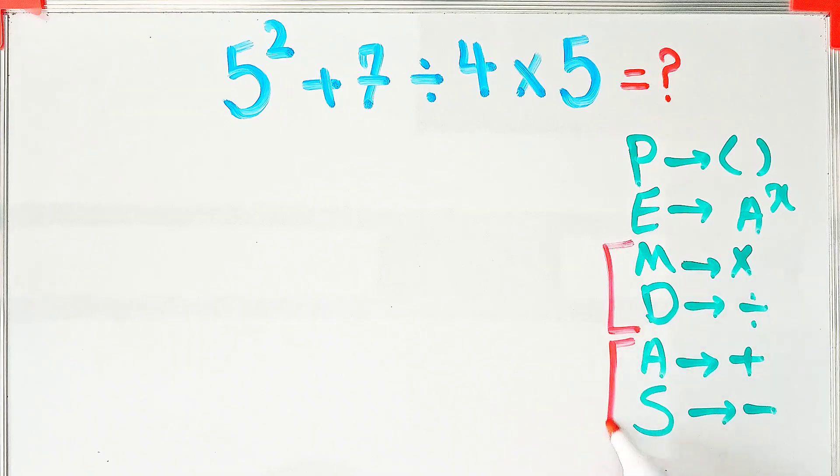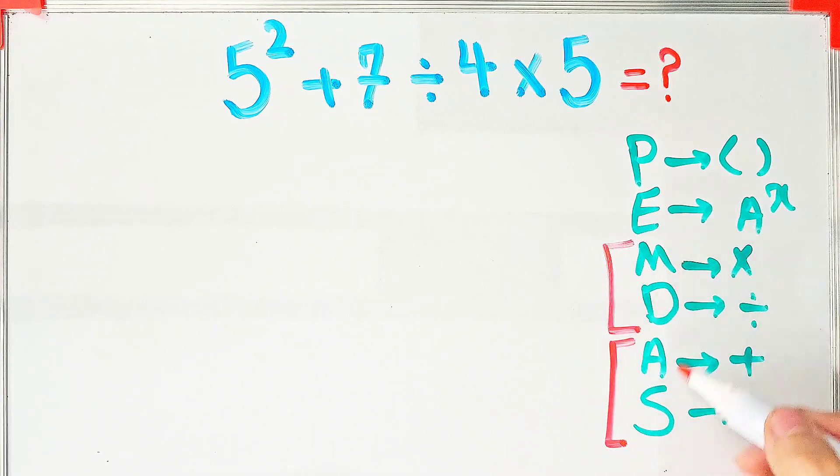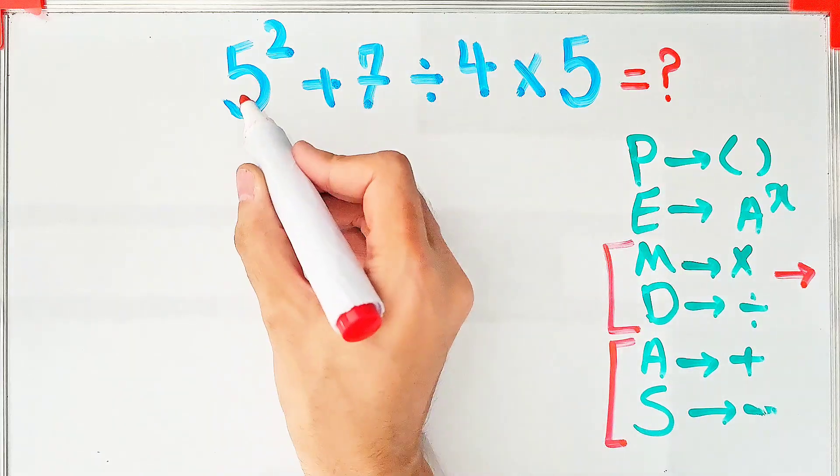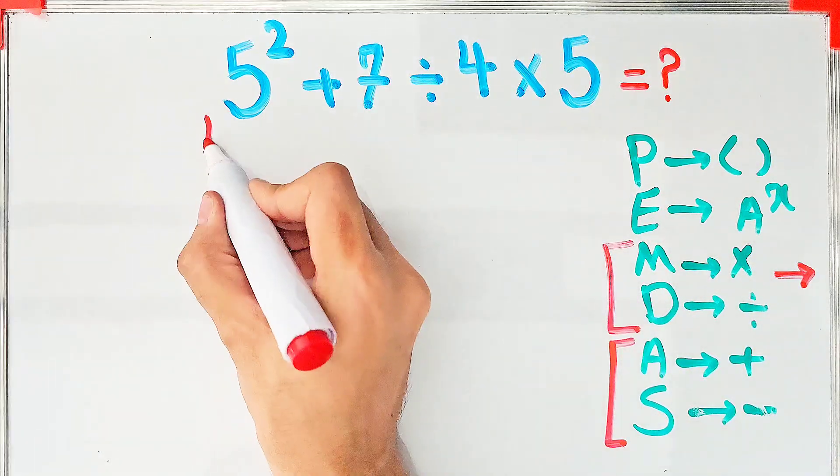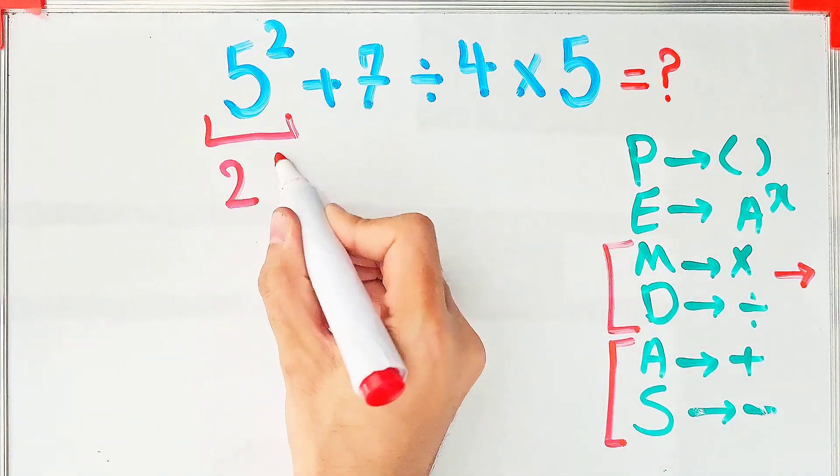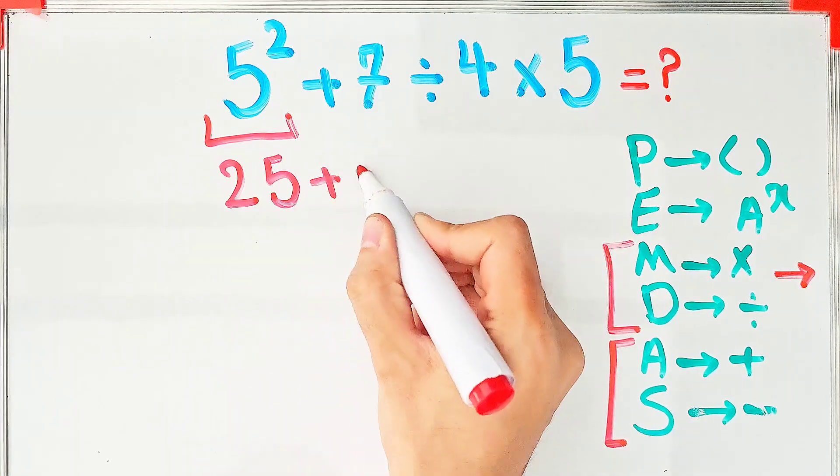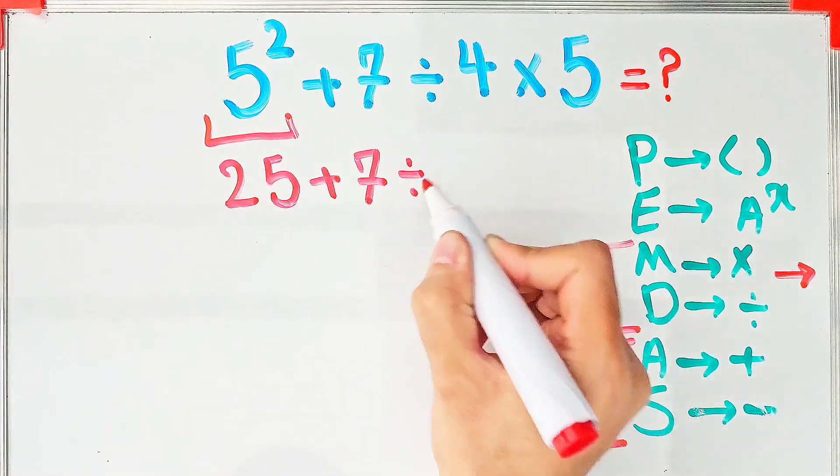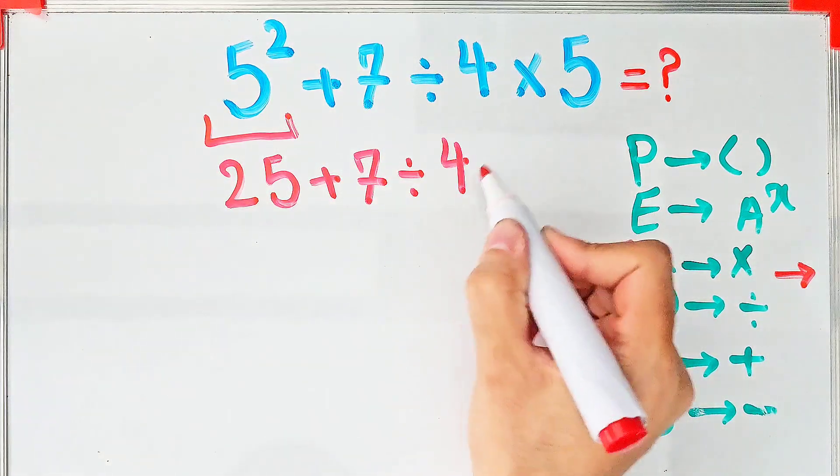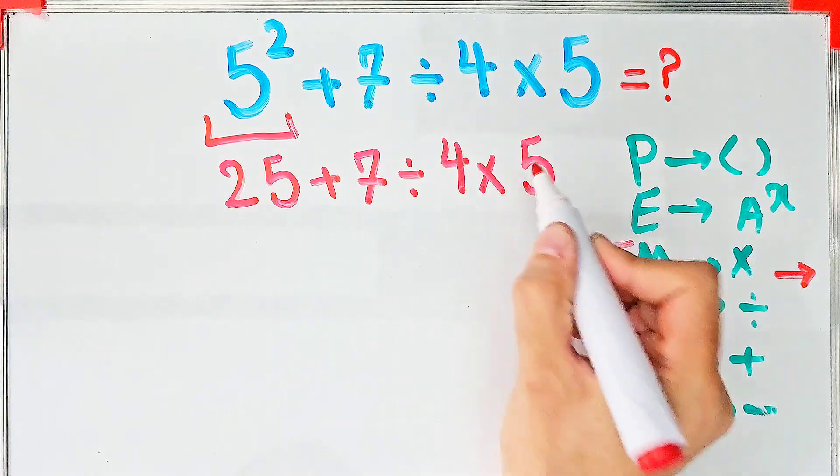Remember that multiplication and division have the same level of priority. Also, addition and subtraction have the same priority. When we have both in an expression, we start from the left and simplify. According to this rule, first we simplify the exponent: 25 + 7 ÷ 4 × 5.